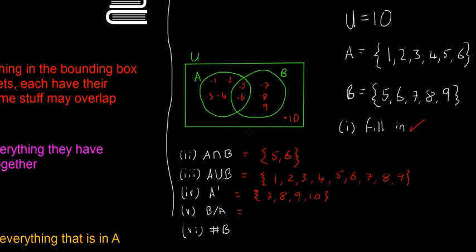B minus A. So that's everything that's in B but that's not in A. So in this case, it's going to be seven, eight, and nine. And 10 isn't in it because 10 isn't in B. So the last one then is the cardinal number of B. So it's basically how many things are there in B. And it's one, two, three, four, five. So in this case, there are five.